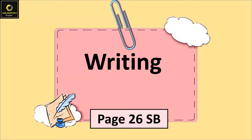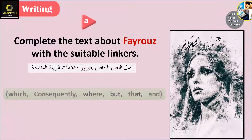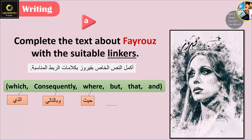Writing: Writing a profile, page 26. Question A: Complete the text about Fairouz's rules with the suitable linkers — which, consequently, where, but, that, and.